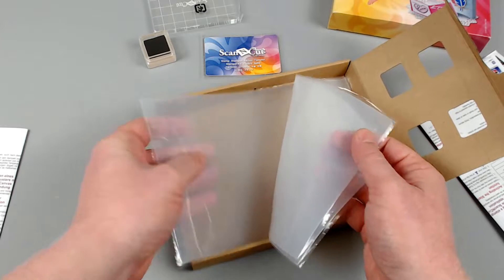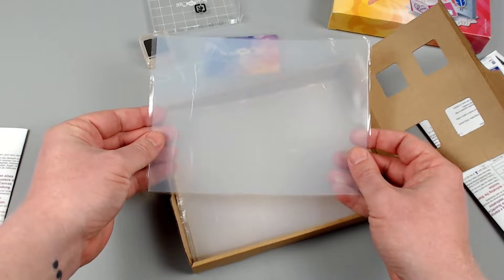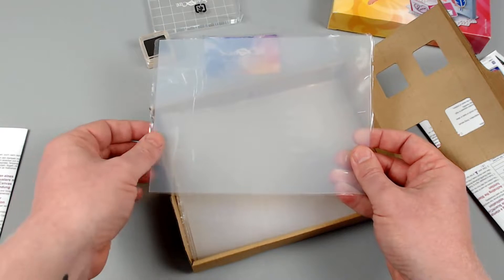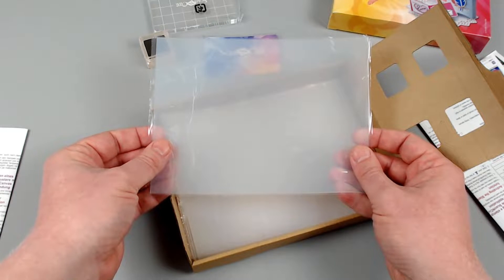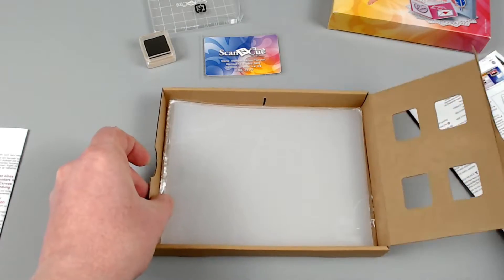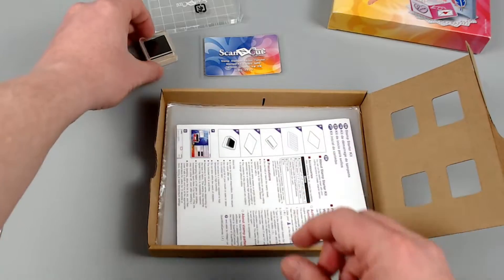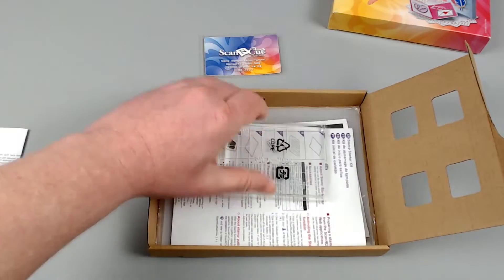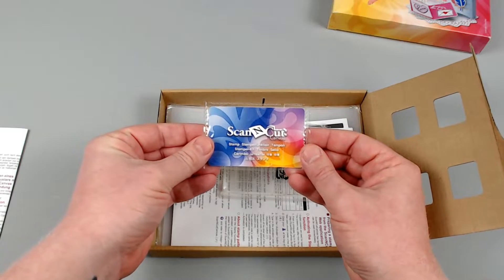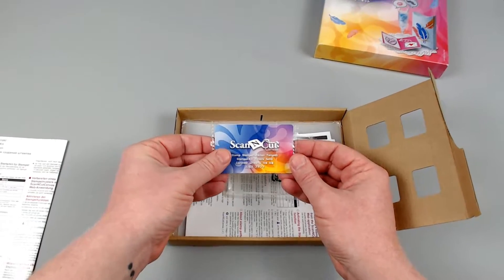And then of course we have the stamp sheets. They are flexible silicone and a good size so you will be able to create a number of different stamps with this kit. I will pop everything back in the box and then I will move on to show you how to register your kit in your online account using the activation card.